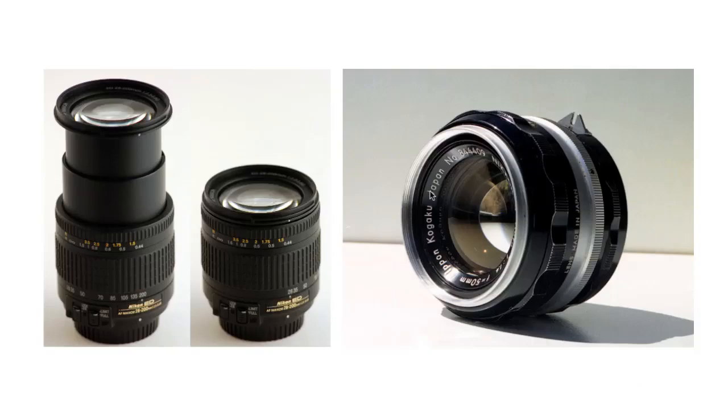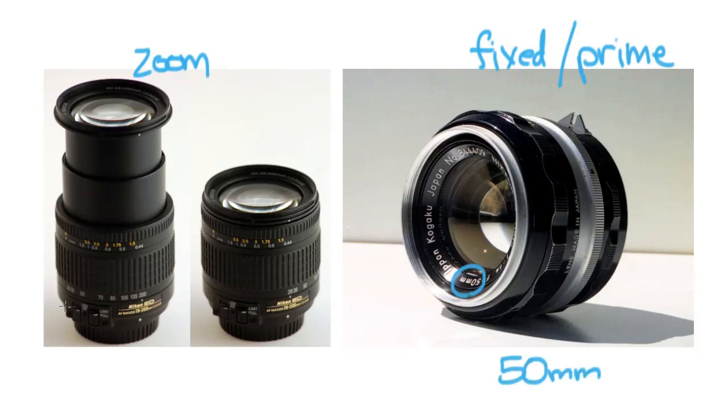Now here you can see two different types of lenses. You can see here this is a zoom lens, and this is what's called a fixed or a prime lens. Now a prime lens is just 50 millimeters. So it just has one length that it can go. And this one right here is actually, if you look closely, I think it says 28, yep, so this is a 28 to 200 millimeter lens.